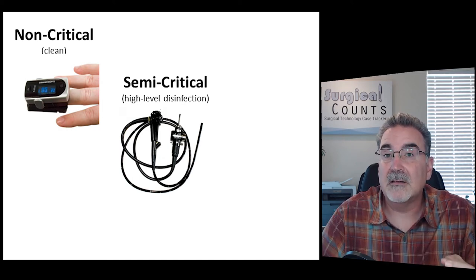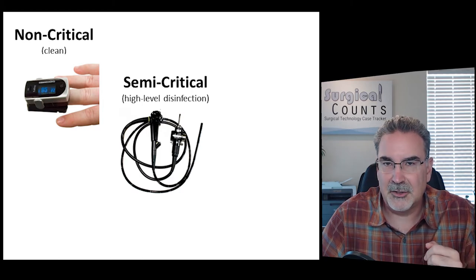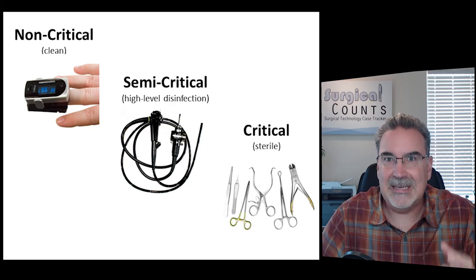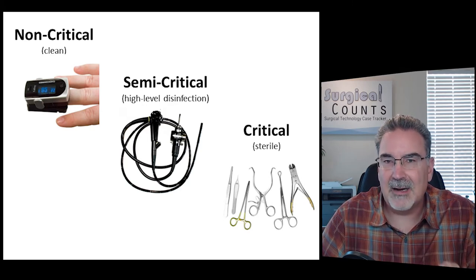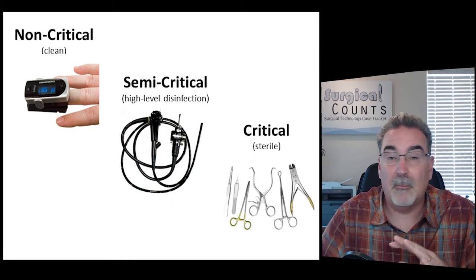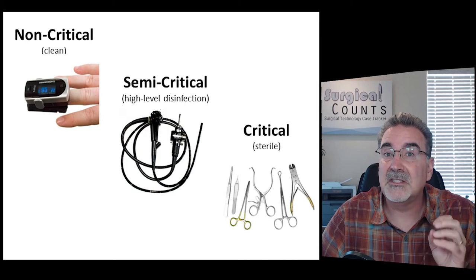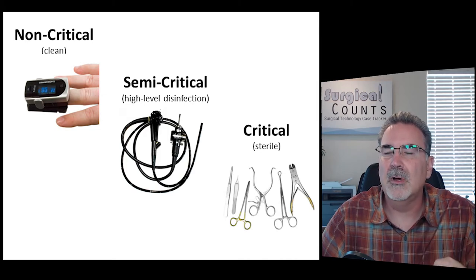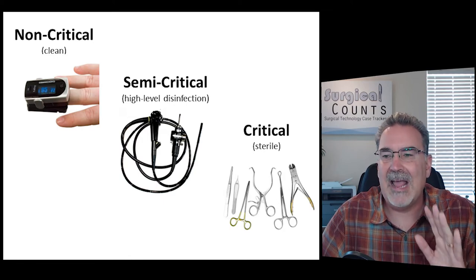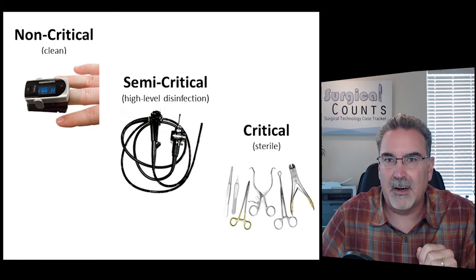In order to get semi-critical instruments really clean, we do something called high-level disinfection. The critical category involves instruments that are going to be used inside the body itself, where sterility is really important. For these, we truly want to get them sterile — we don't want any germs or any spores on there. So we're going to do an intense job of sterilizing these instruments to make sure we're not adding any new pathogens to the body.